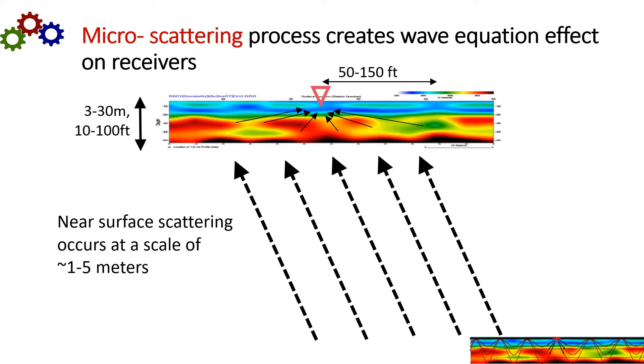At the receiver, the reverse happens. An upcoming wave field hits the scatterers near the receiver and then transmits slowly to the receiver. So these scatterers act like a complex antenna. And this wave equation effect distorts the source and receiver wave fields. So a nearby receiver can have a very different response function caused by these near surface scatterers.